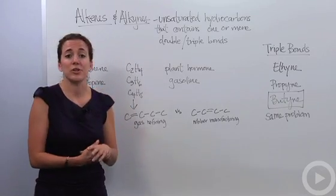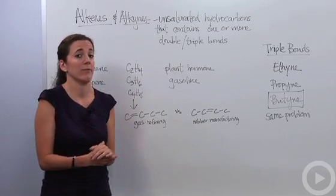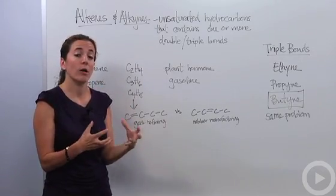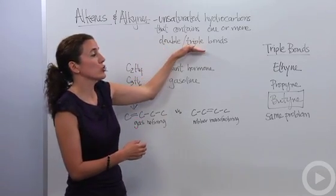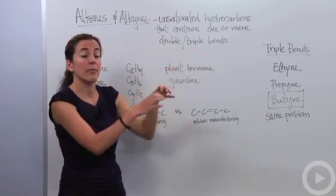Alkenes and alkynes are unsaturated, meaning that they do not have the maximum amount of hydrogens that it can have around carbon because they contain double bonds if they're an alkene, or triple bonds if they're an alkyne in the parent carbon chain.